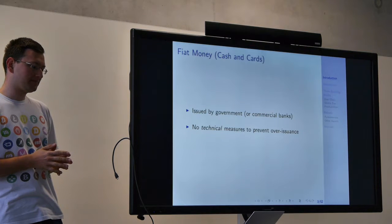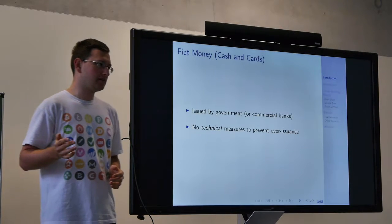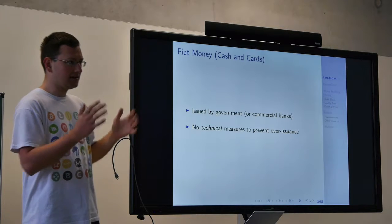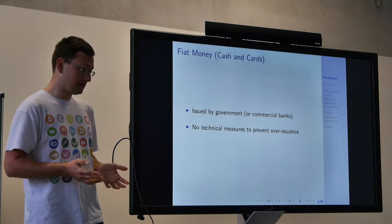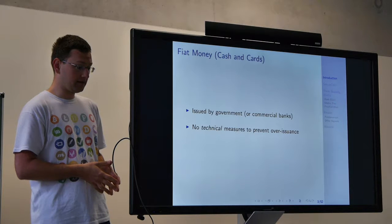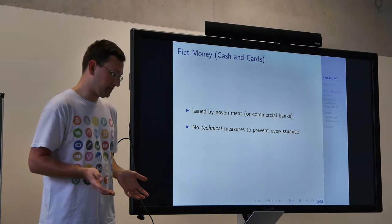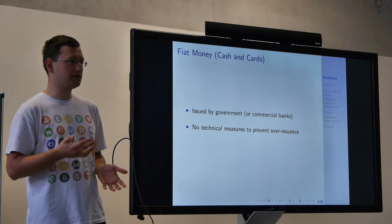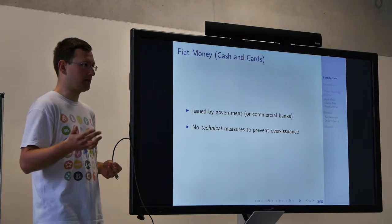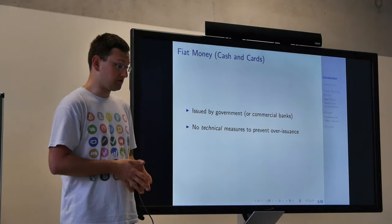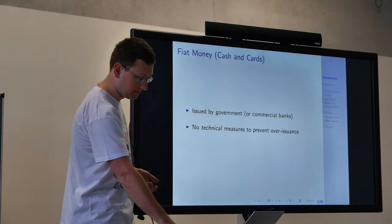Fiat money is a term popularized by the cryptocurrency community, meaning governmental money — money issued by the government, or more precisely issued by commercial banks with the approval of the government. It is valuable simply because the government says to use it as money. The major drawback is there are no technical measures to prevent over-issuing. If too much money is issued, we have inflation — prices rise and you cannot plan for the future because you cannot tell how much your money will be worth.